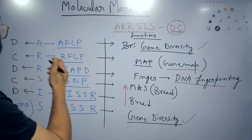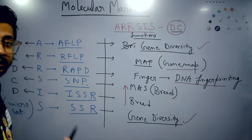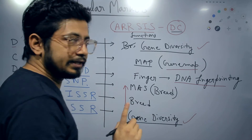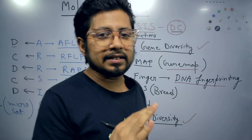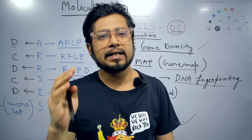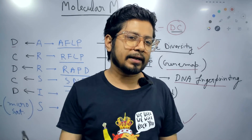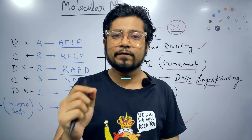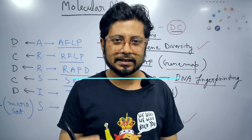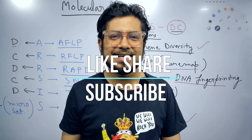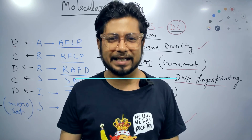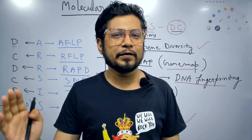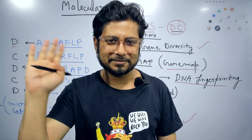So the A-R-R-S-I-S and DC mnemonic trick helps you understand molecular markers — RFLP, RAPD, AFLP, SNP, SSR, and ISSR. If you like this video, please hit the like button, share this video with your friends, subscribe to this channel to get more trick videos in the future. Thank you. Bye.